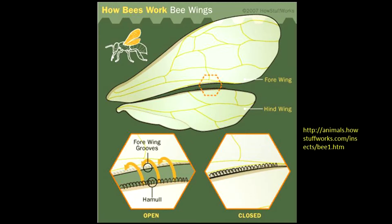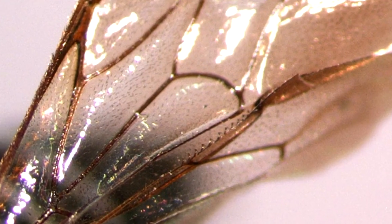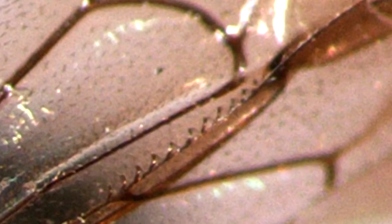Many hymenopterans have small hooks called hamuli. These hind wing hooks insert into a groove on the forewing, connecting the two wings and making the insect functionally dipterous.